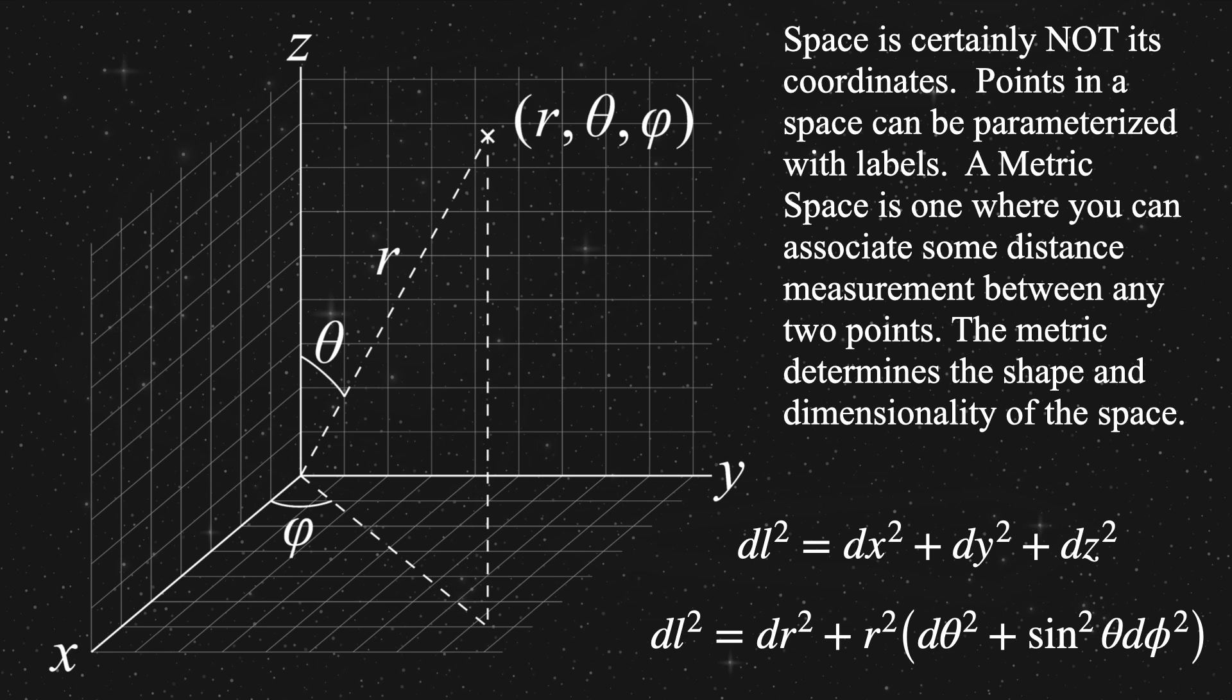Of course, the most common system for labeling points in a space is the Cartesian coordinate system, with orthogonal x, y, and z. We could also use a different kind of orthogonal coordinate system, the spherical coordinate system. Here we have a radial coordinate, which is some distance away from the arbitrary origin, or zero point.